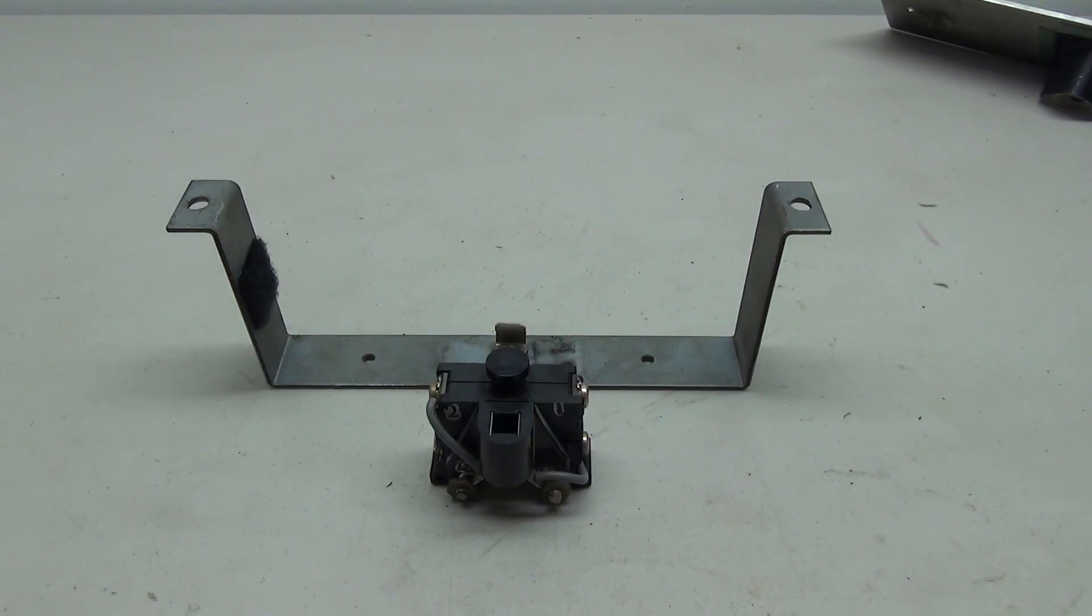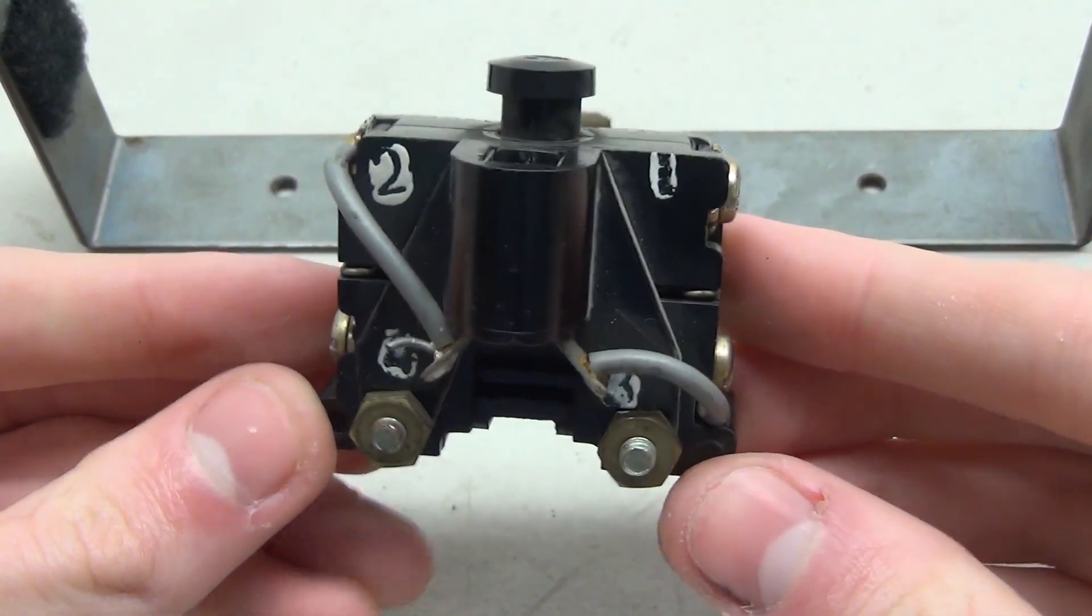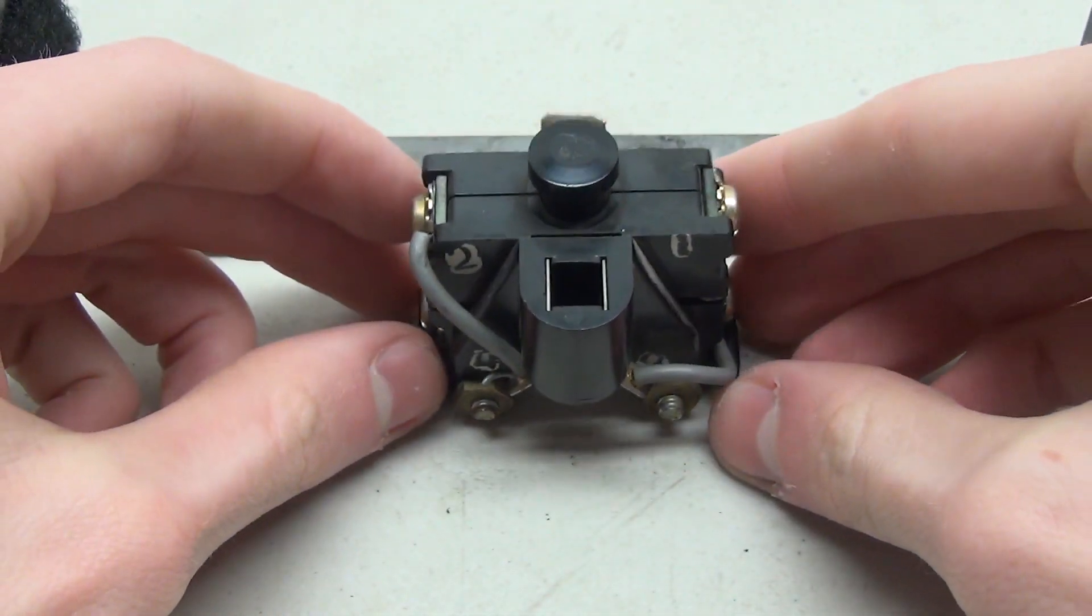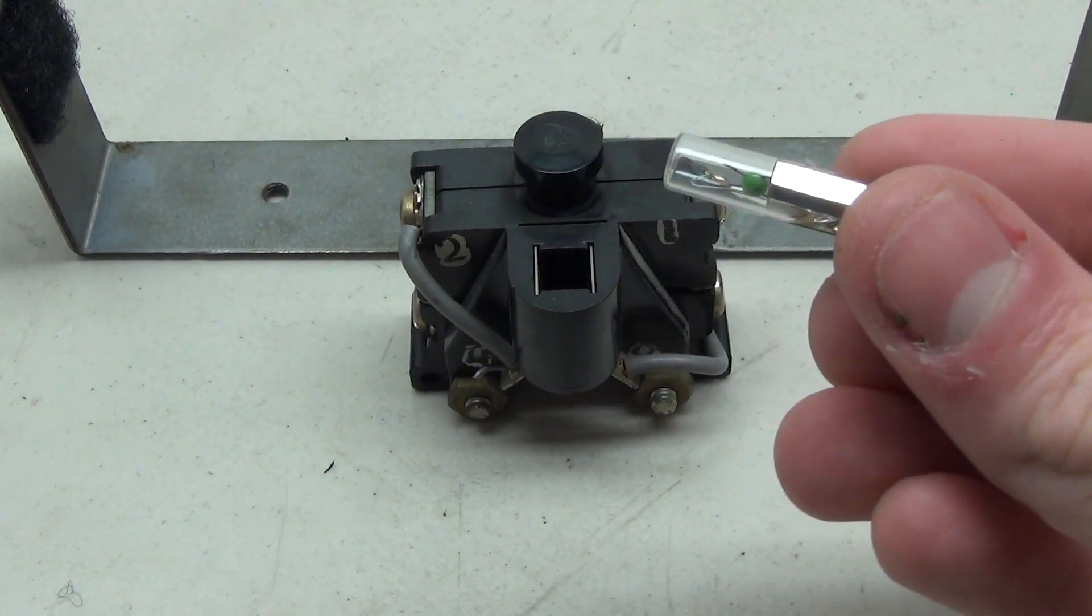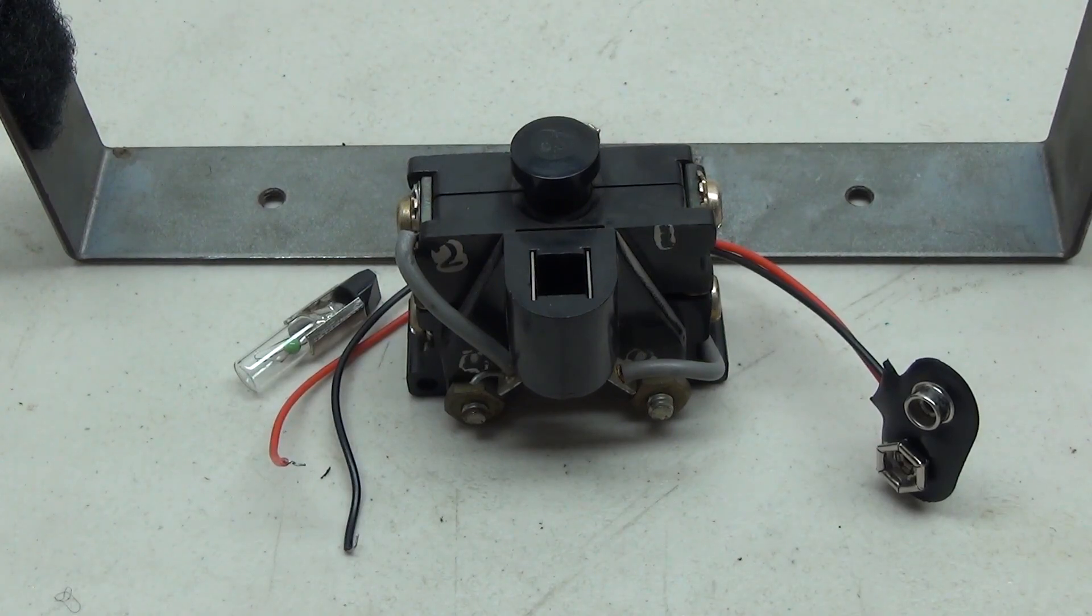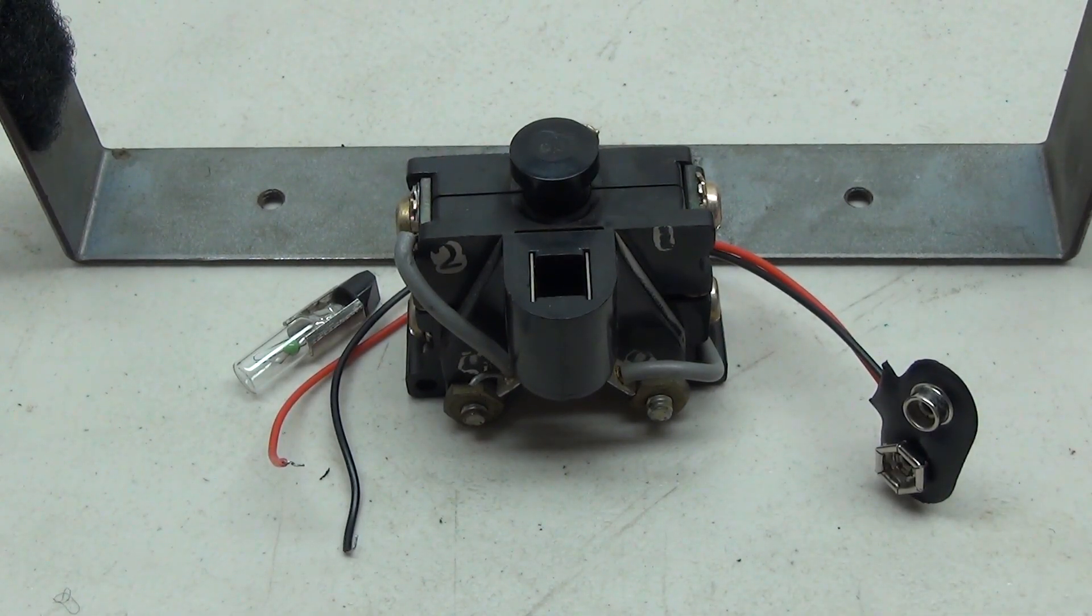So now let's take a look at how to wire one of these. Now believe it or not, this is actually a very simple wiring. All you need is the actual switch, your light bulb - in my case we have a 6 PSB bulb - and a power supply. In my case, a 9 volt battery.